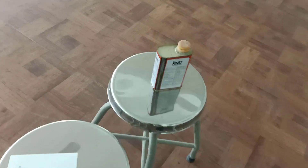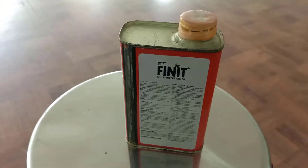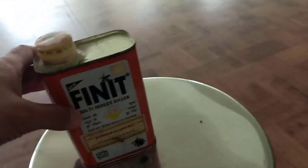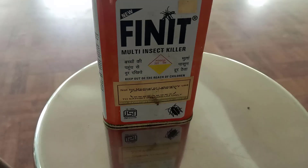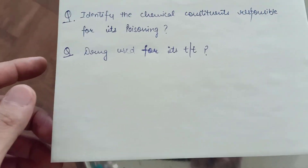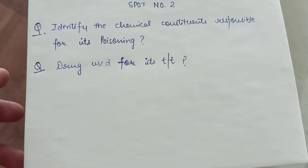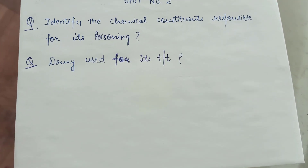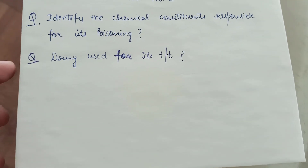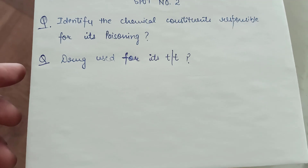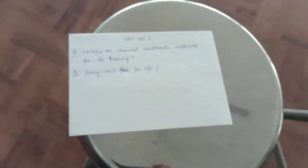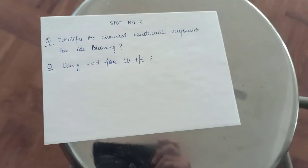This was the second spot. This was a bottle of organophosphorus compound — OPC compound. The question asked was: identify the chemical constituent responsible for its poisoning, and the drugs used for its treatment. Drugs used for its treatment are atropine and PAM, also whenever required.